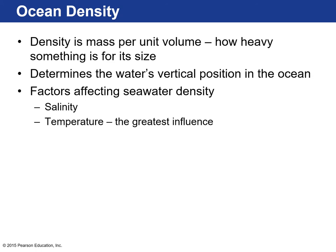Ocean density is a measure of mass per unit volume — how heavy something is for its size. This determines water's vertical position in the ocean. For example, gasoline floats on water because its density is less than that of water. In the ocean, factors that affect the density of seawater include salinity and temperature, with temperature having the greatest influence.